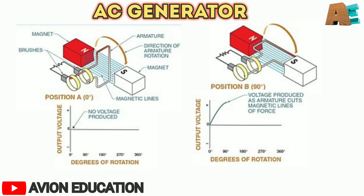As you can see in the figure, there are multiple positions. In position one, the armature is parallel to the magnetic lines of force — since it cuts no lines of force, the induced voltage is zero. The armature then rotates to position two, where it is perpendicular to the magnetic lines of force, cutting a maximum number of lines of force.